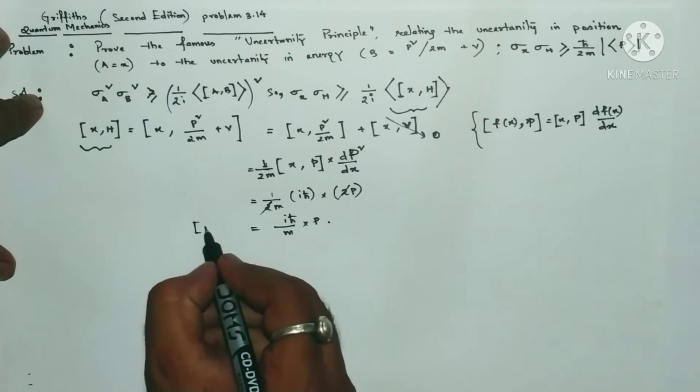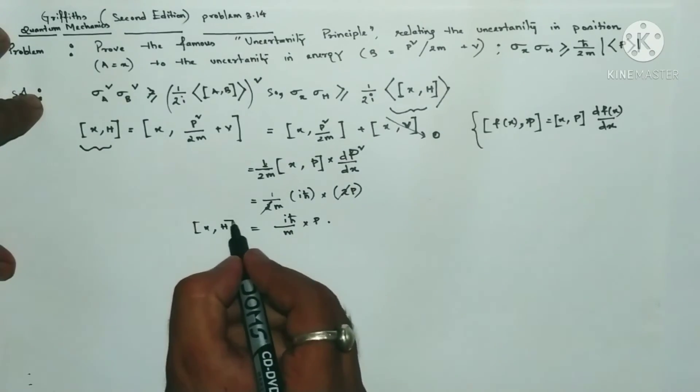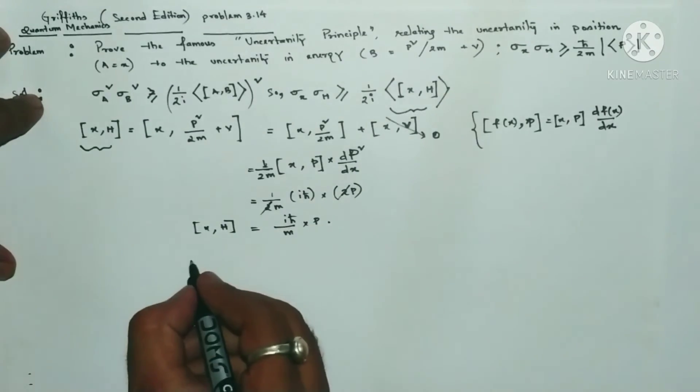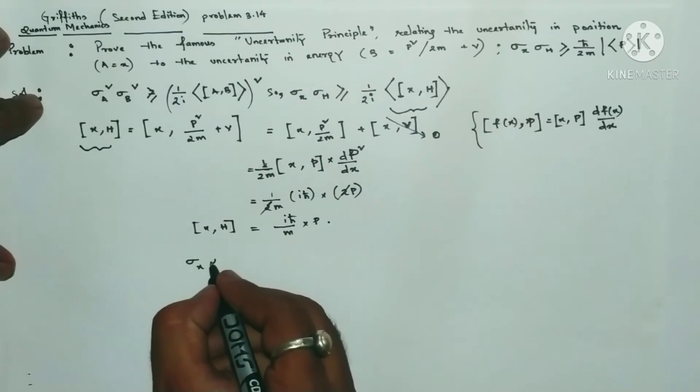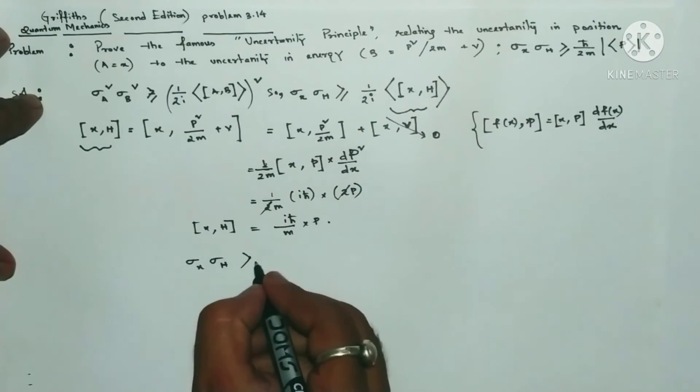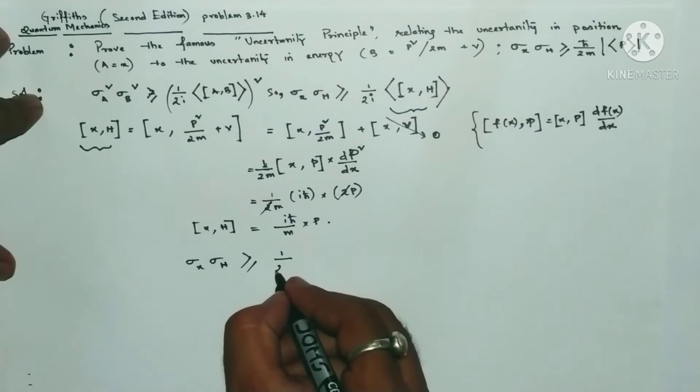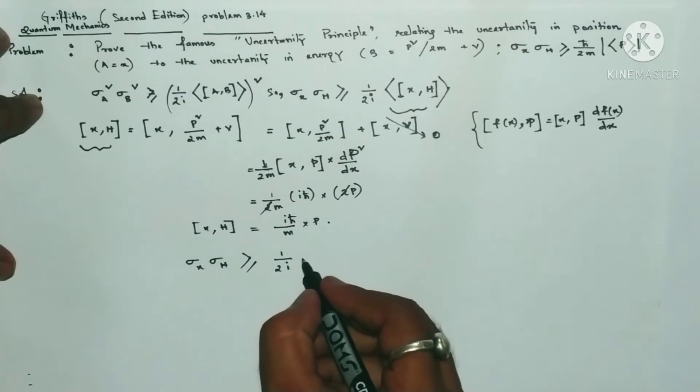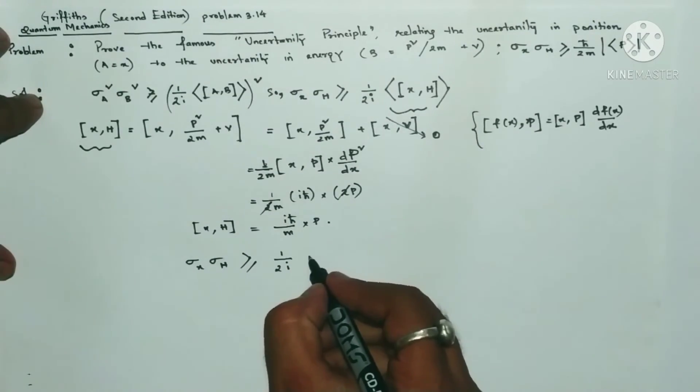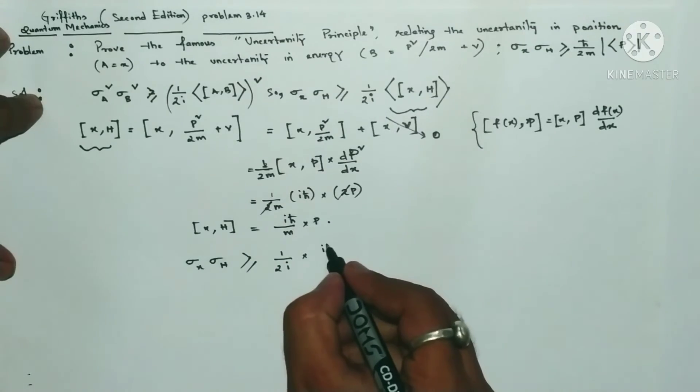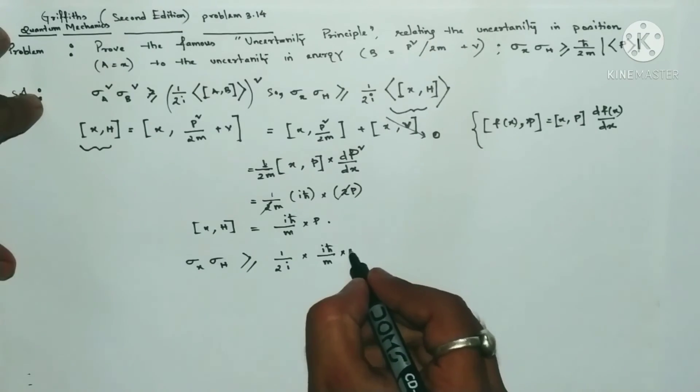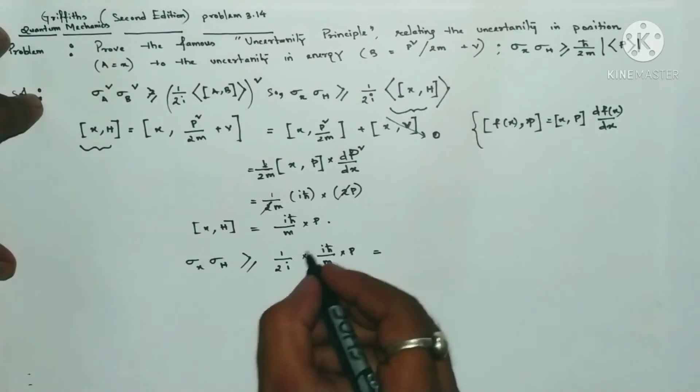We will replace this commutator of X comma Hamiltonian here. So sigma X multiplied by sigma H is greater than or equals to one by 2i times i h-bar by m multiplied by P.